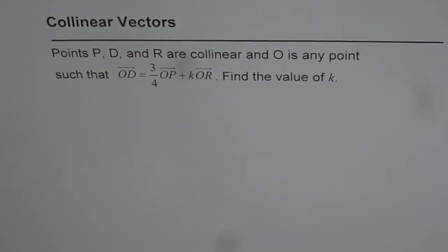Collinear vectors. Points P, D, and R are collinear and O is any point such that OD equals 3/4 OP plus k times OR. Find the value of k.